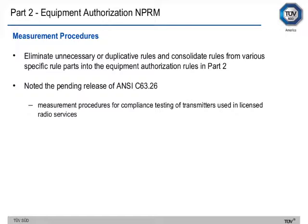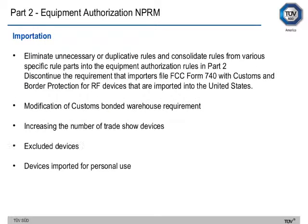For measurement procedures, the NPRM proposes to eliminate unnecessary or duplicative rules and consolidate them from various specific rule parts into equipment authorization rules in Part 2. The ANSI C63.26 standard, pending release and addressing compliance testing for licensed radio devices, should also be recognized by the FCC and codified. For importation, they are eliminating duplicative rules and continuing the requirement that importers file FCC Form 740 with Customs and Border Protection for RF devices. They are also modifying the customs bonded warehouse requirement, increasing the number of trade show devices allowed to be imported, and addressing devices excluded from the rules and those imported for personal use.